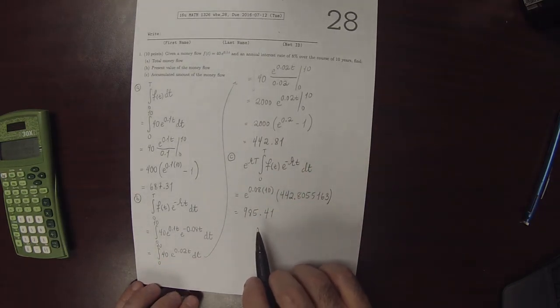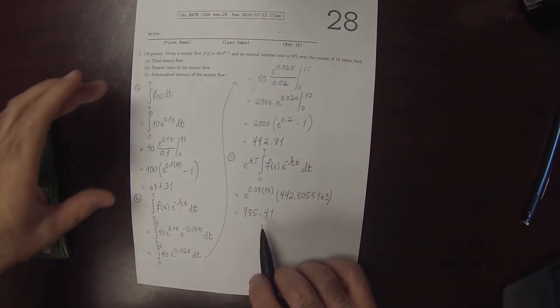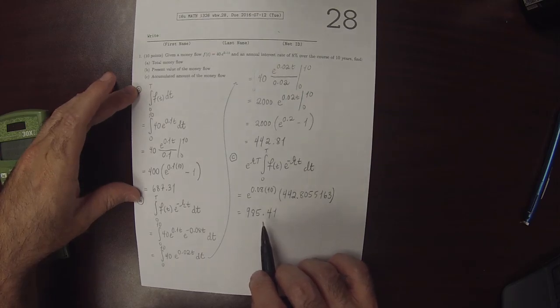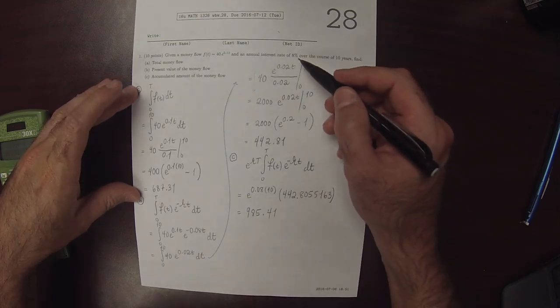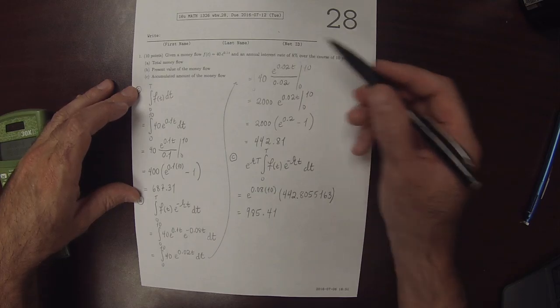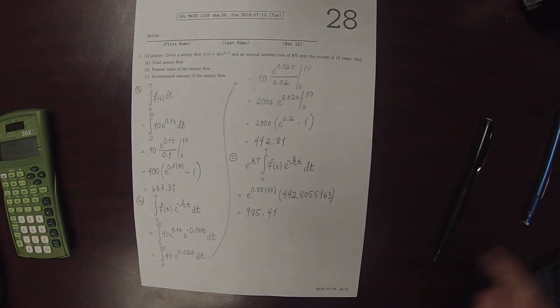This number is the biggest number of them all, because this is if we were, at every moment of operating this money flow, we were putting it into an account that accumulated 8%.